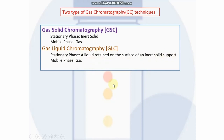The basic principle of gas chromatography is that the sample is vaporized by injection into a heated system. After this, the samples are eluted through a column by an inert gaseous mobile phase, and the components are detected.